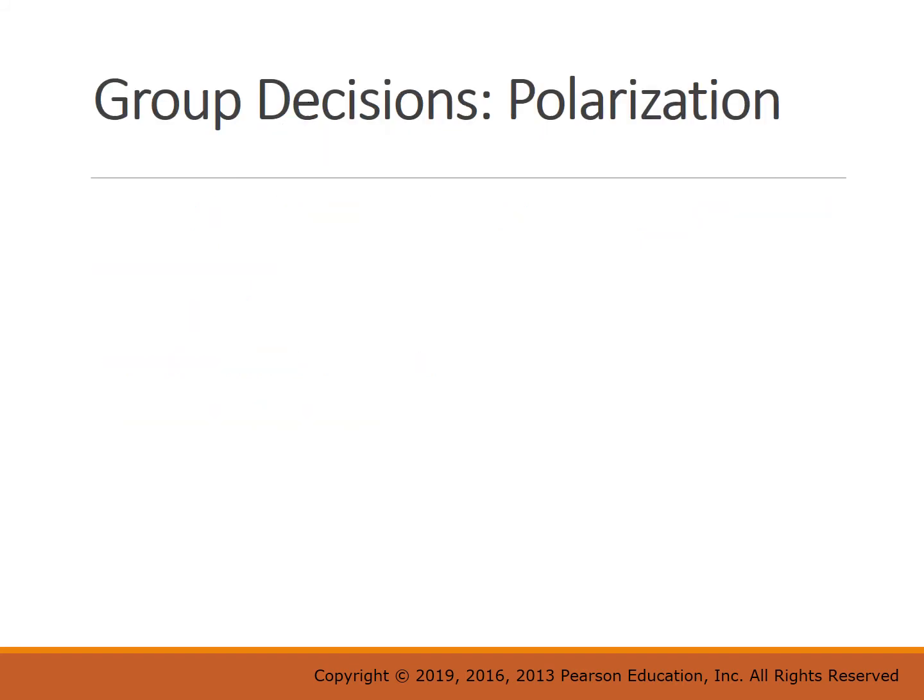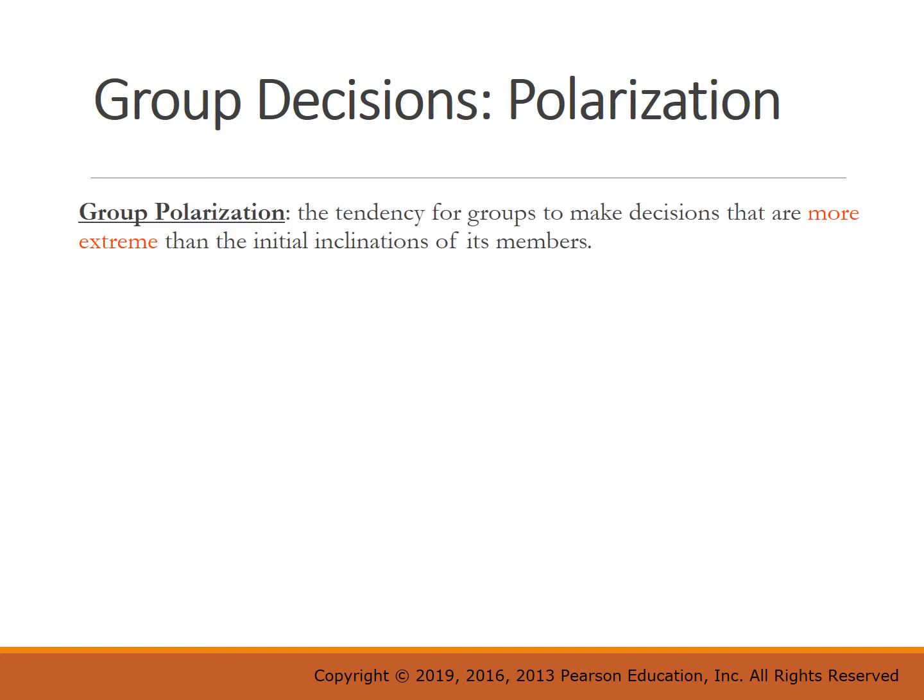The final form of process loss we'll discuss today is group polarization — the tendency for groups to make decisions that are more extreme than the initial inclinations of its members.